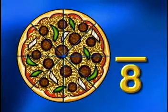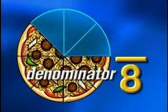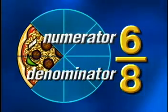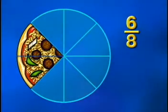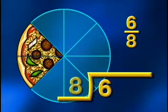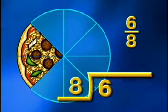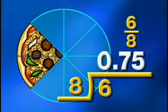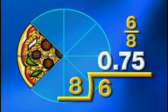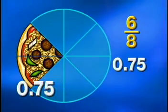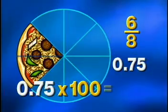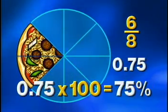Welcome back. How did you do? Norbert ordered an eight slice pizza, so eight becomes the denominator. He ate six, so that is the numerator—Norbert ate six eighths of the pizza. To find the decimal, we divide six by eight. The answer, in decimal notation, is seventy-five hundredths, or 0.75. To figure out the percentage, we multiply 0.75 by one hundred. Norbert ate seventy-five percent of his pizza.